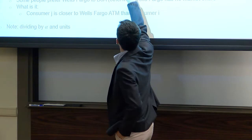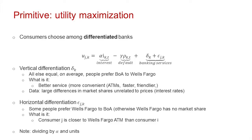We add a third piece: delta_k plus epsilon_jk. The third piece is banking services, which is where insights from IO are useful, not just tools. Delta_k captures vertical differentiation between banks — if Bank of America has many more deposits than Wells Fargo at the same interest rate, it's because consumers like Bank of America's banking services and are willing to pay a premium. Market shares of banks are very different and very persistent over time, so consumers treat these banks as quite different.